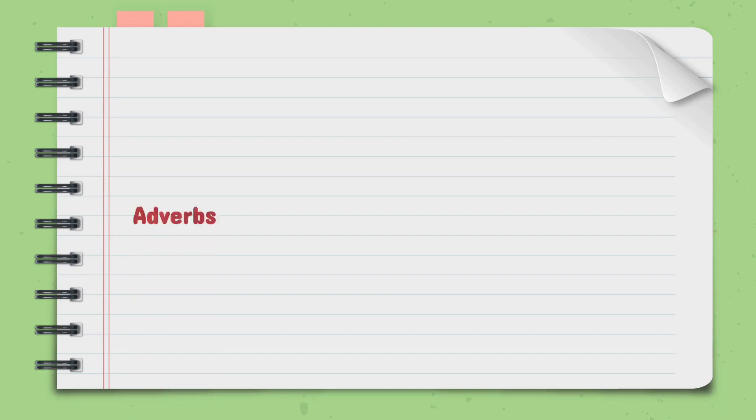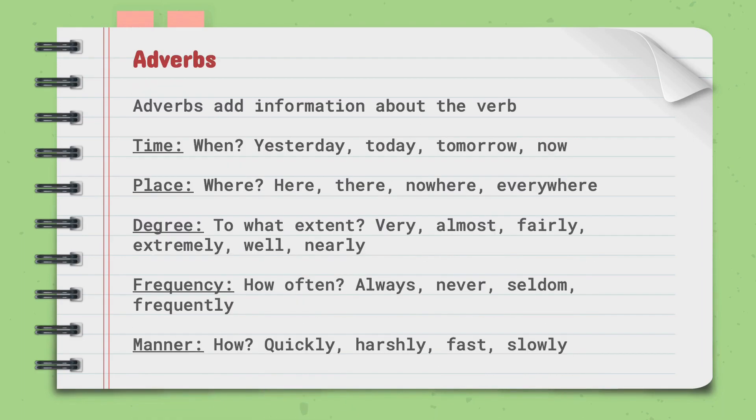Now, let us look at adverbs. Adverbs add information about the verb. There are different types of adverbs. The first one being adverbs of time. This questions when. Was it yesterday, today, tomorrow, or now? Another adverb is place. This questions where. Was it here, there, nowhere, or everywhere?